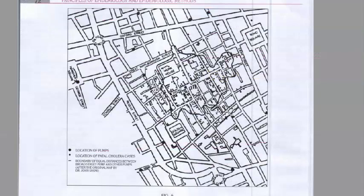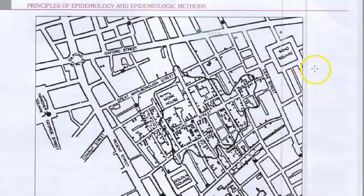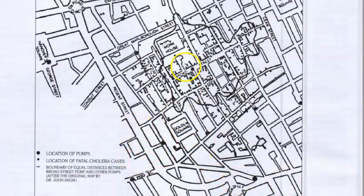This is a spot map of Asiatic cholera in London. It shows the location of the pumps and the location of fatal cholera cases.